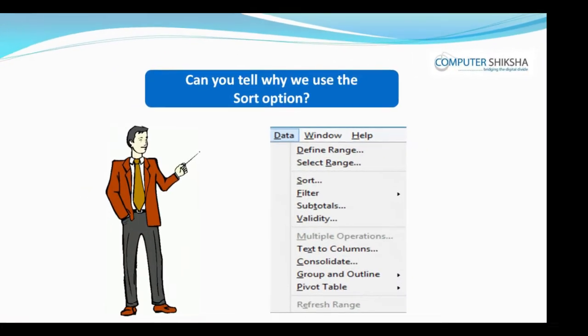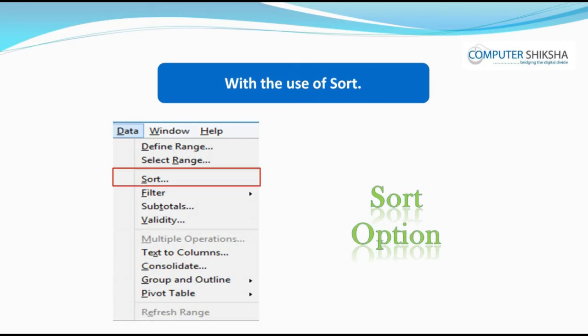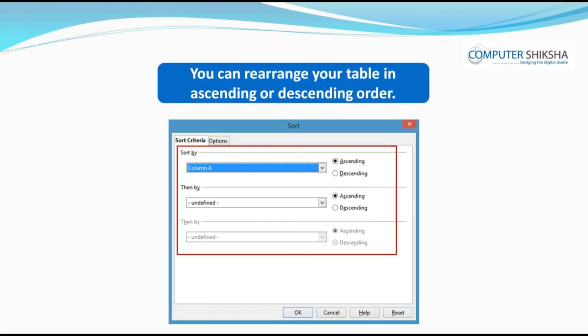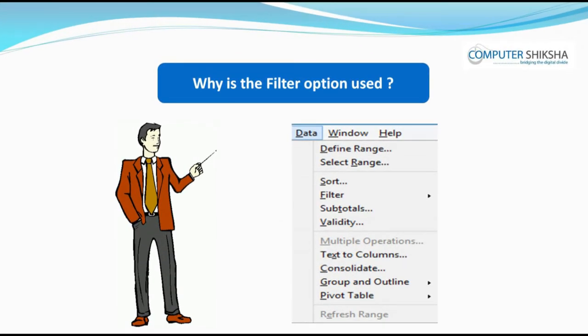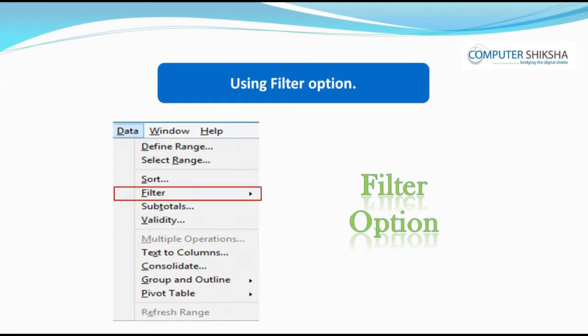Can you tell why we use the sort option? With the use of sort, you can rearrange your table in ascending or descending order. Why is the filter option used? Using the filter option, you can get information about the data in any row.